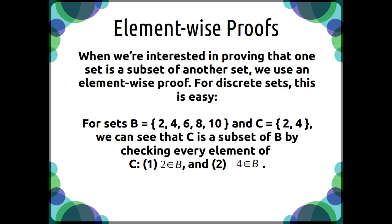When we're interested in proving that one set is a subset of another set, we use an element-wise proof. For discrete sets that don't go on forever, this is easy. So for the sets B, which are the even numbers between 2 and 10, and then C, which is just 2 and 4, we can see that C is a subset of B by checking every element of C.